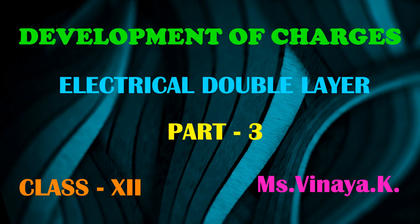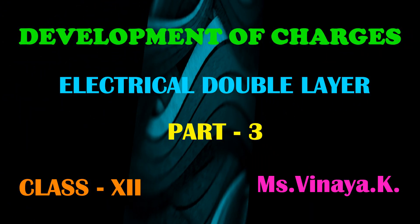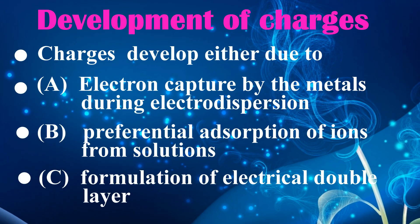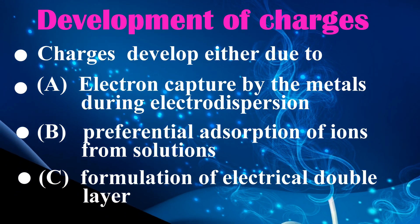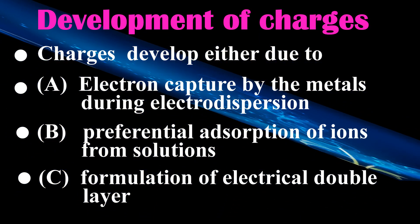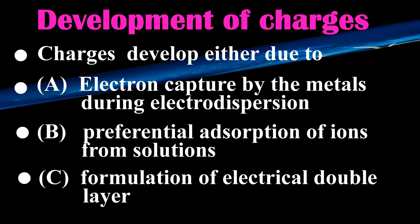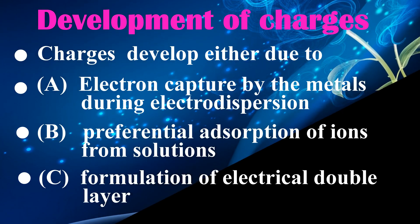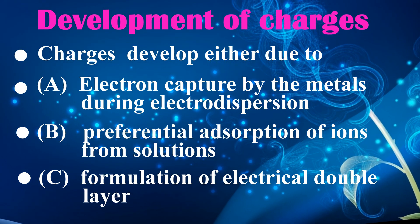Today, we will be discussing the development of charges and the electrical double layer. Charges develop either due to electron capture by metals during electrodispersion or preferential adsorption of ions from solution. This results in what is called the electrical double layer.